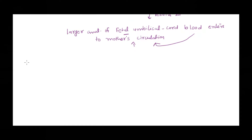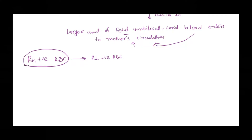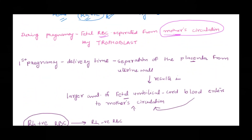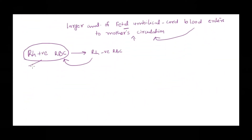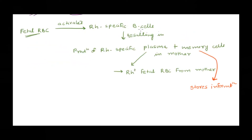At the time of delivery, some RH positive fetal RBCs enter the mother's circulation, which contains RH negative RBCs. For the mother, these fetal RBCs contain a foreign antigen, so her immune system mounts a response. The fetus has already been delivered — there is no immediate problem — but the mother's immune system has been triggered. These fetal RBCs activate the mother's B cells.